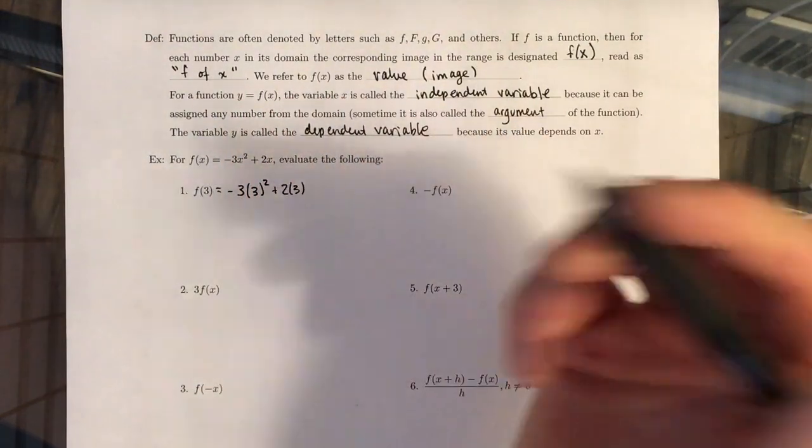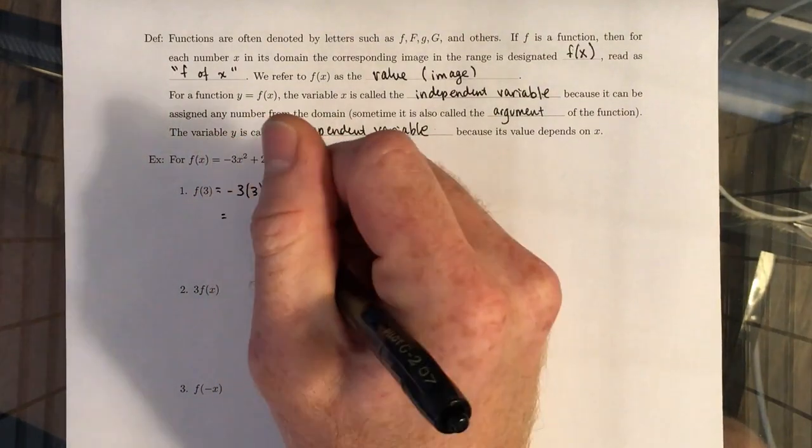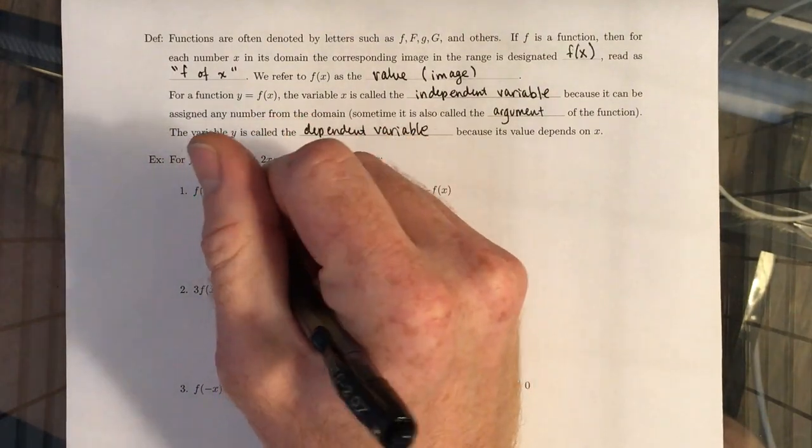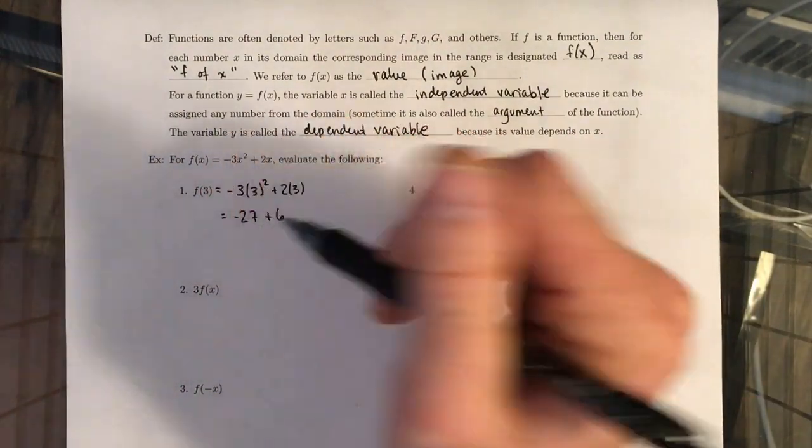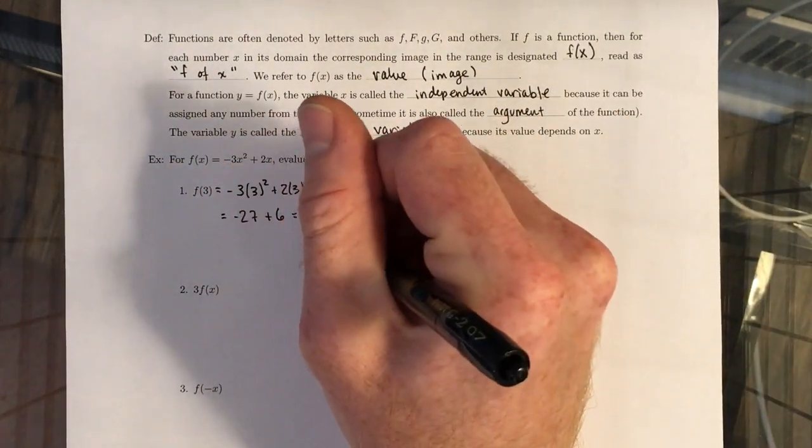All we have to do is plug 3 in wherever we have an X. And then we simplify. So 3 squared gives us 9 times negative 3 gives us negative 27. And then 2 times 3 gives us 6. So if we have negative 27 plus 6, we end up getting negative 21.